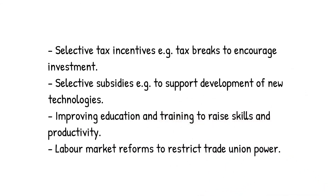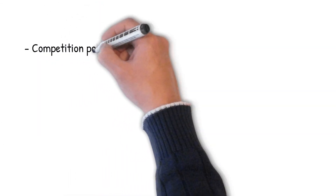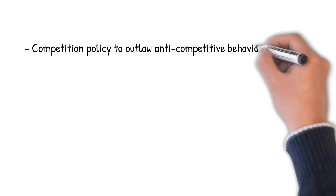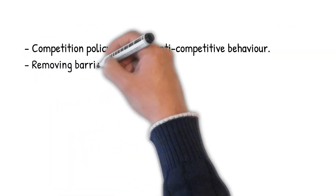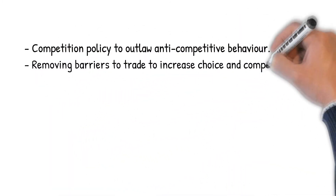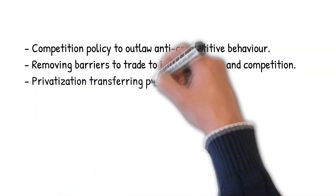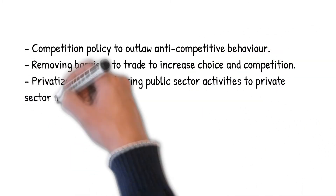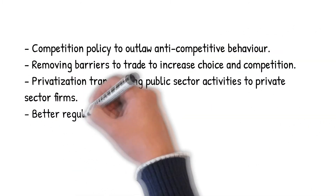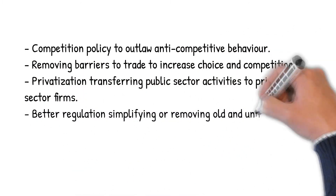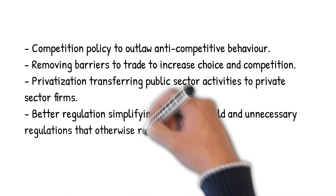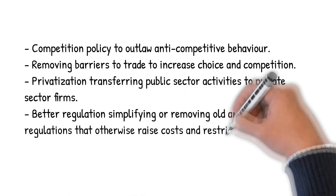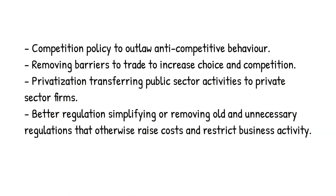Further examples include: selective subsidies to support development of new technologies; improving education and training to raise skills and productivity; labor market reforms to restrict trade union power; competition policy to outlaw anti-competitive behavior; removing barriers to trade to increase choice and competition; privatization — transferring public sector activities to private sector firms; and better regulation by simplifying or removing old and unnecessary regulations that otherwise raise costs and restrict business activity.